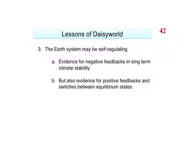It's important to note that the Earth system might be self-regulating. There is evidence for negative feedbacks in long-term climate stability, but there is also evidence for some positive feedbacks in switches between equilibrium states. And today we talked about a few negative and positive feedbacks relevant to Earth's systems.